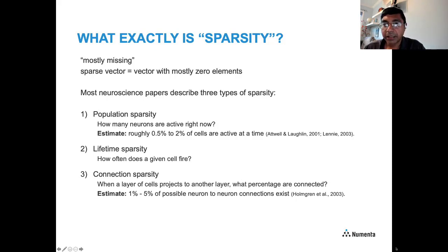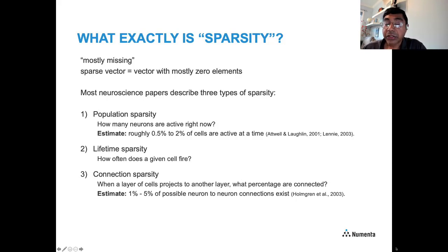If you look at all of these properties together, the situation looks quite different from typical deep learning systems. The activation vectors and weight matrices in deep learning are nowhere near as sparse as what we see in the brain. This is quite different from today's machine learning systems.